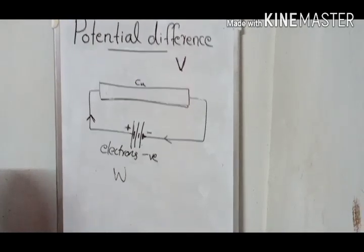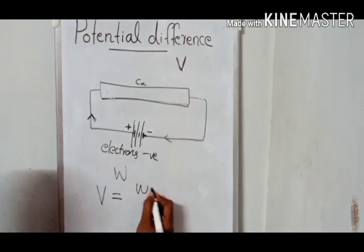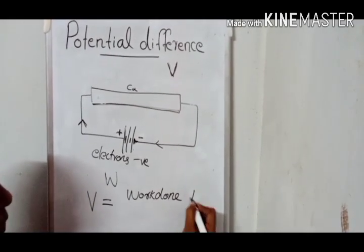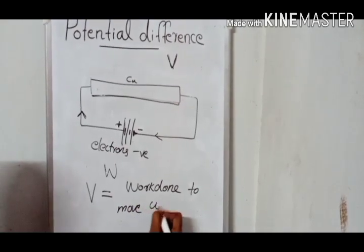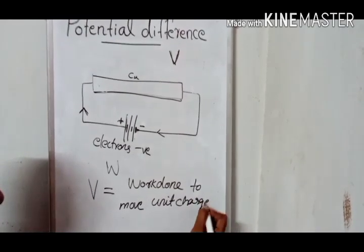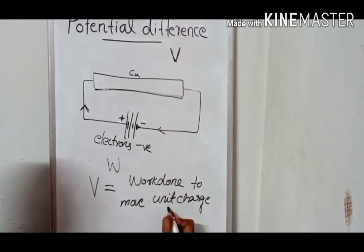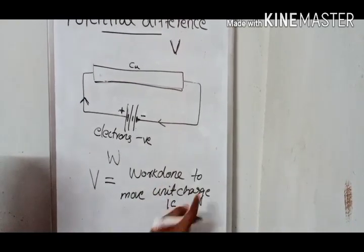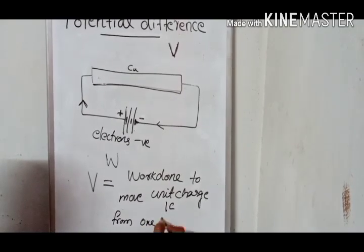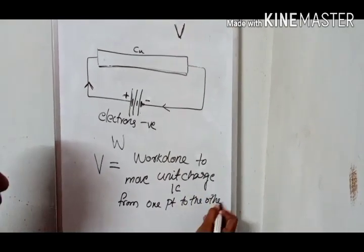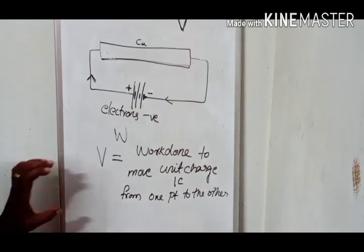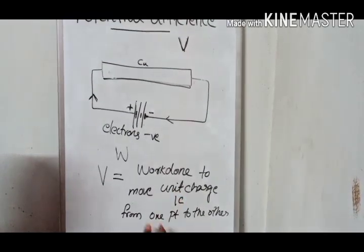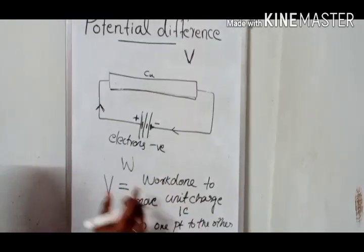So potential difference is defined as the work done to move a unit charge from one point to another point. What is unit charge? Coulomb is the unit of charge. So unit charge means one coulomb of charge. The battery is doing the work. The work done to move one coulomb of charge from one point to the other point — that is called potential difference.